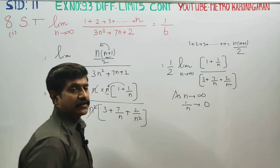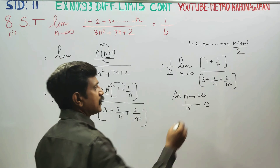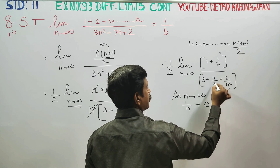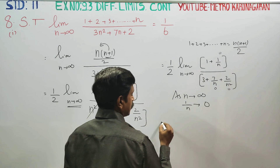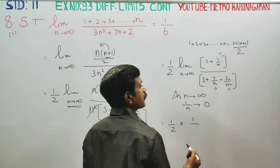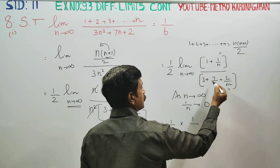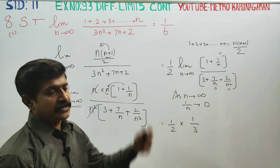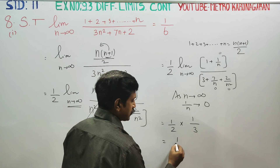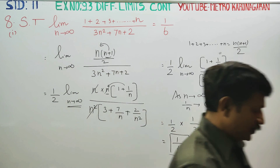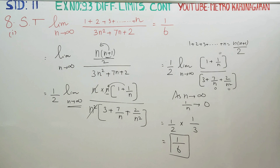As n turns to infinity, 1 by n turns to 0 — using that concept, 1 by n is 0, 2 by n is 0. Balance: 1 by 2 over 3, which gives your answer as 1 by 6. This is your proof — you have to prove that your answer is 1 by 6. Thank you.